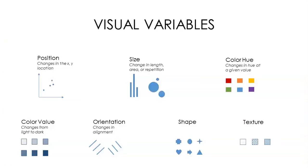We represent data points with visual marks on the page or screen, and we vary these marks in different ways to represent the relationships between data. On this slide are the cartographer Jacques Bertin's seven original visual variables. Bertin was a French cartographer who, with his publication of Semiologie Graphique in 1967, was among the first people to provide a theoretical foundation to data visualization. If you study visualization further, you may see other visual variables referenced, but a lot of visualizations boil down to these seven.